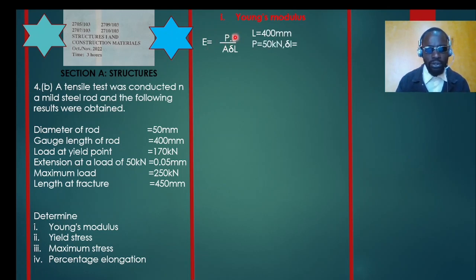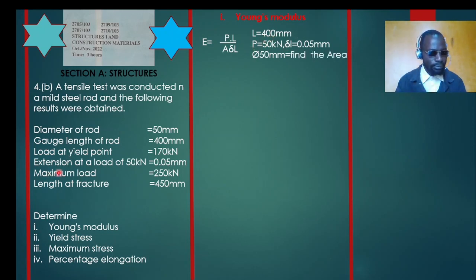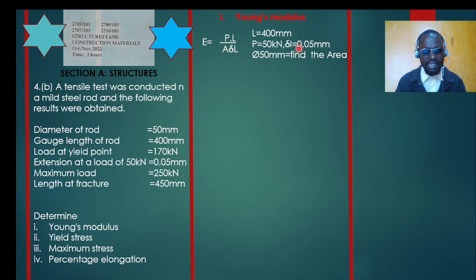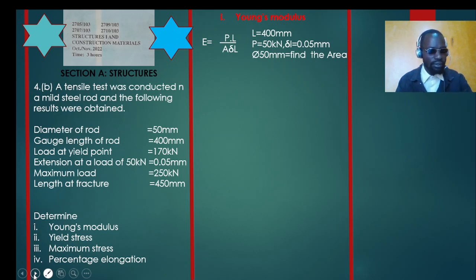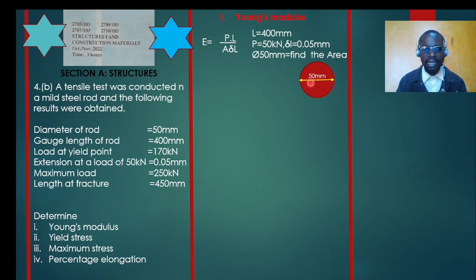We know the gauge length is 400 millimeters. For the load, we have to consider the 50 kilonewton load that produced the measured extension, because in this formula the change in length was caused by that 50 kilonewton load. From the given diameter, we can find the cross-sectional area — the rod is circular in shape with a diameter of 50 millimeters.